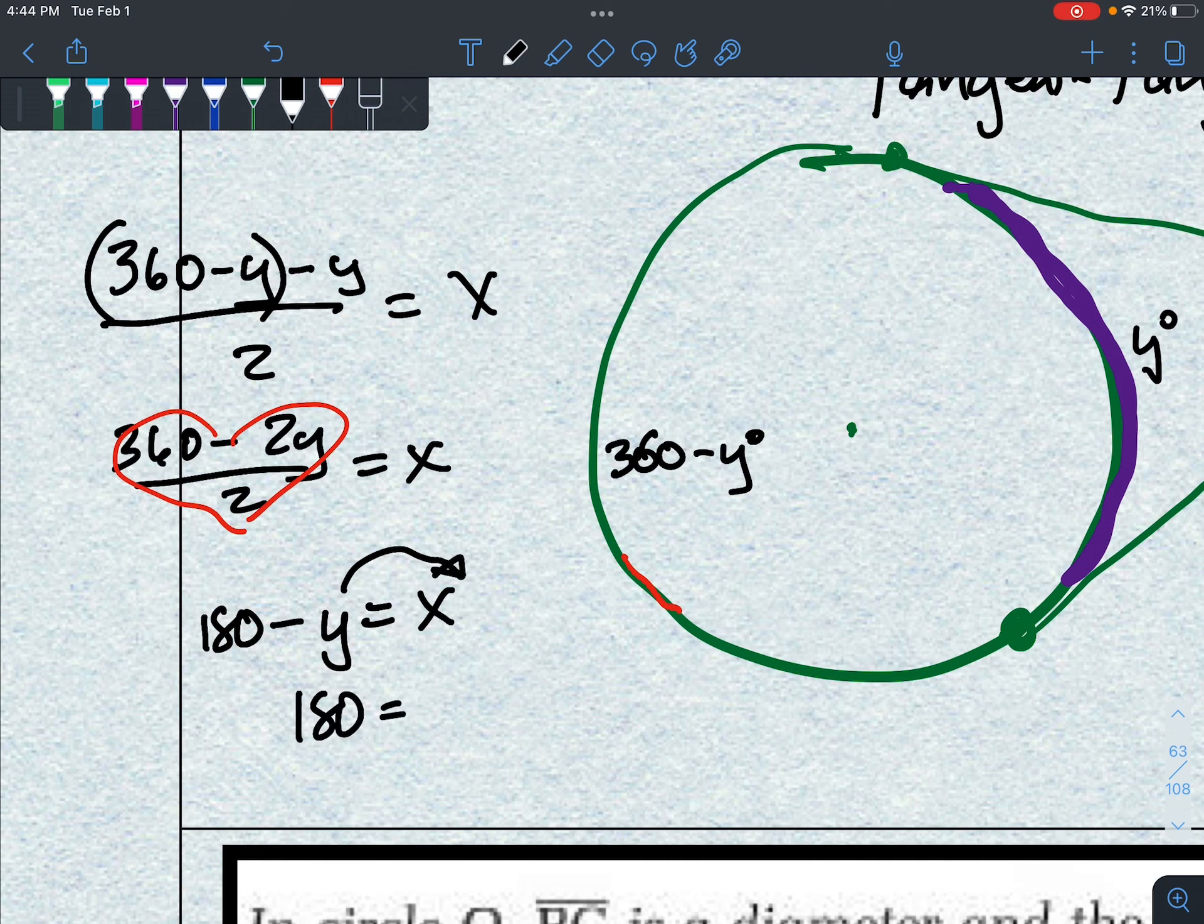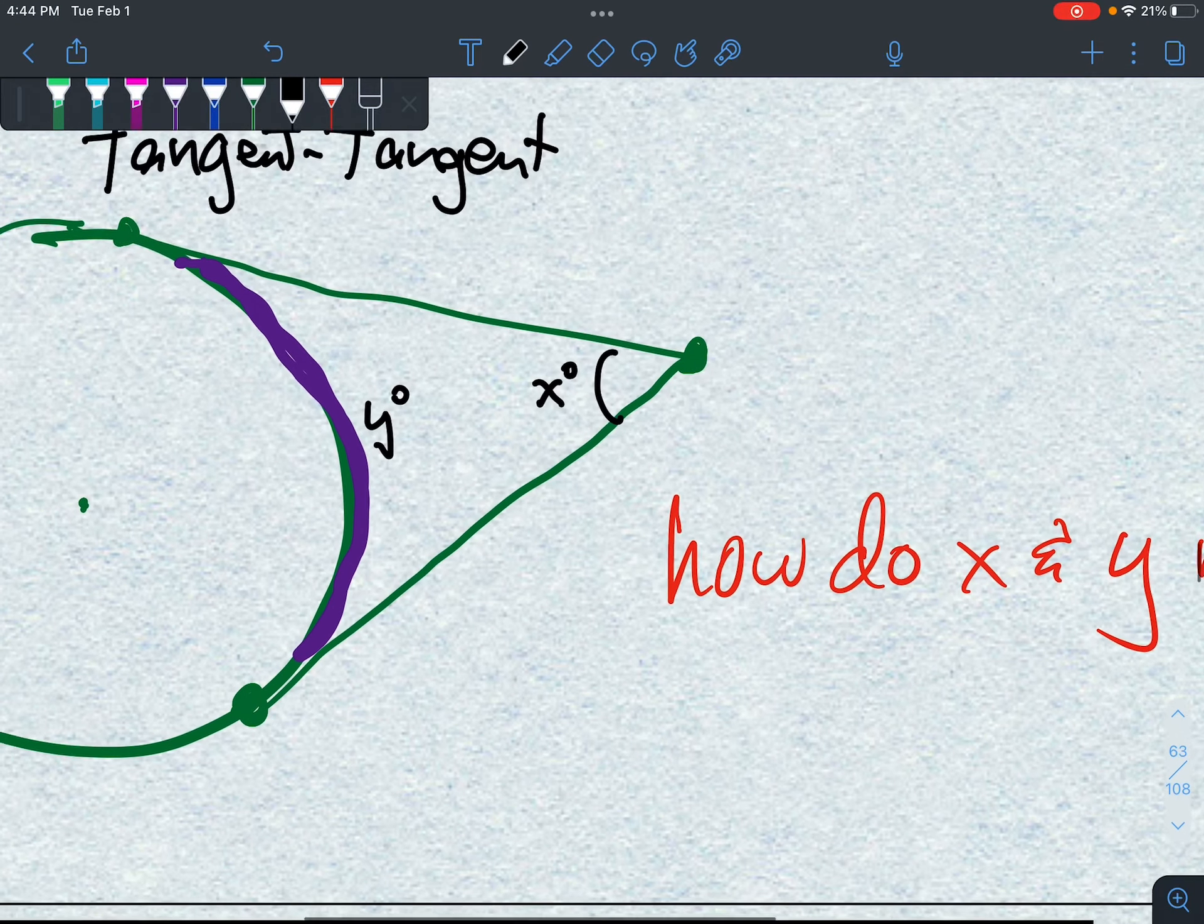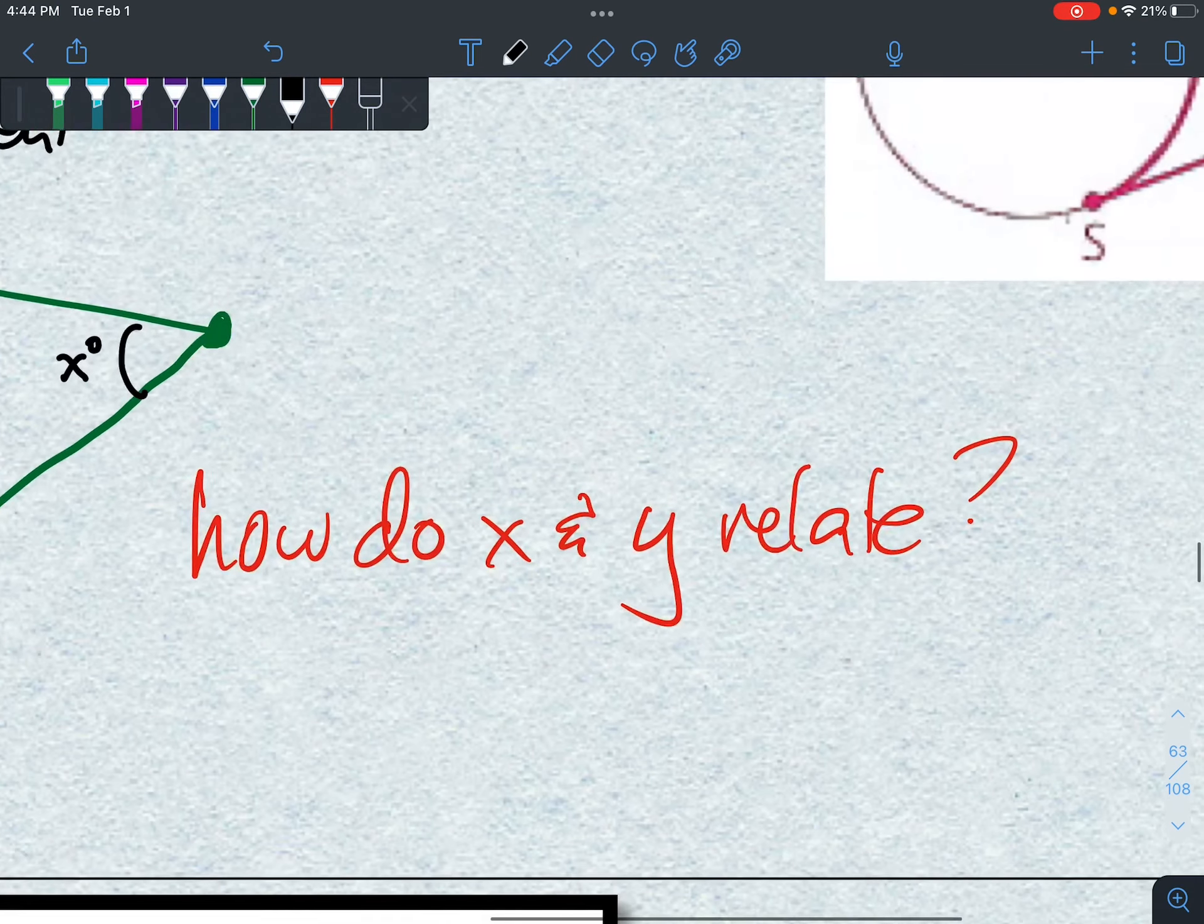And now I'm going to casually toss the y to the other side. The reason is this now tells me how the two angles are related. How does x relate to y? They add up to 180. Therefore they are supplementary.